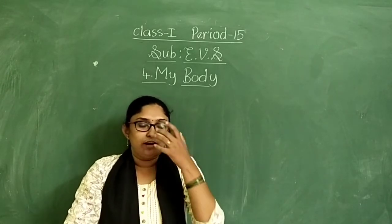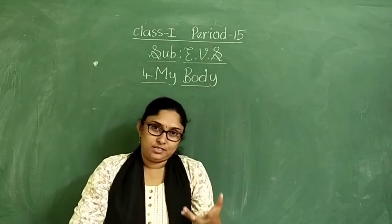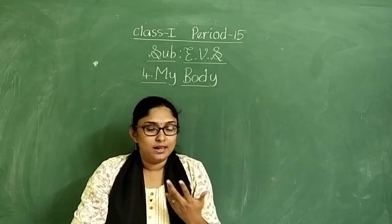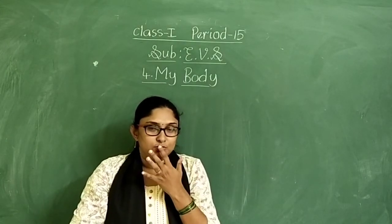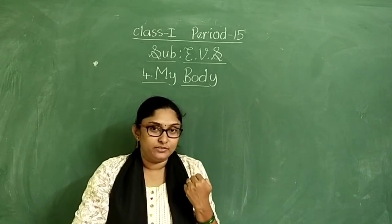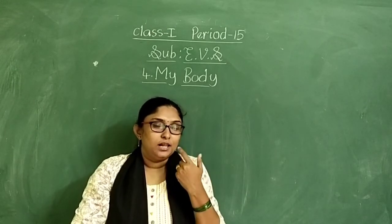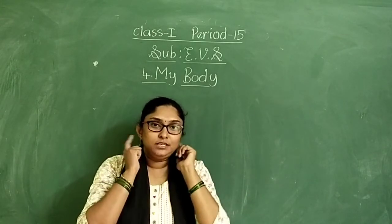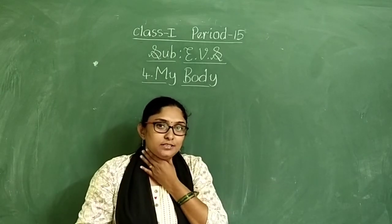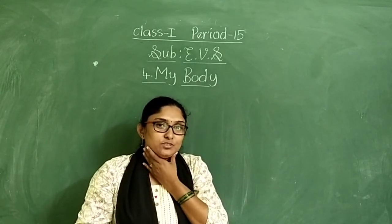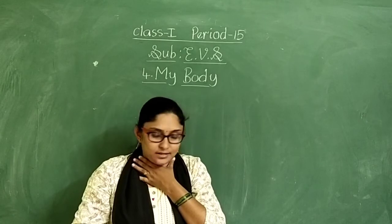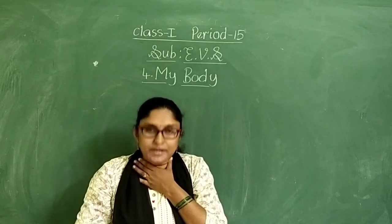Our eyes are useful to watch and see. And our nose is useful to smell. Mouth is useful to talk. Teeth are to chew the food. Tongue is to taste. Ears are to hear. Neck — we use the neck for moving our head side to side, up and down.